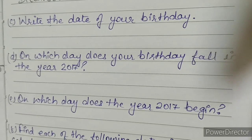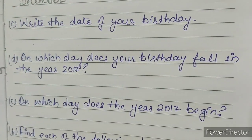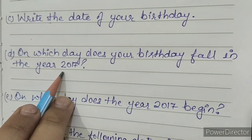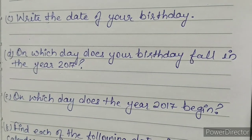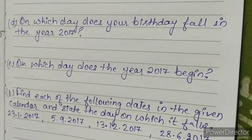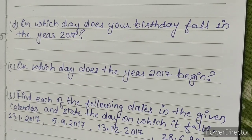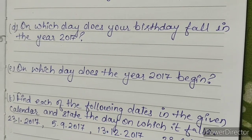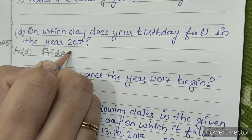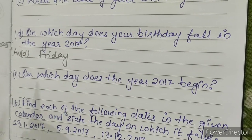C. Write the date of your birth — this question is homework for you; you have to do it on your own. D. On which day does your birthday fall in the year 2017? My birthday is on 5th May and it falls on Friday according to the 2017 calendar. Check your own date of birth in the 2017 calendar and write the answer accordingly.